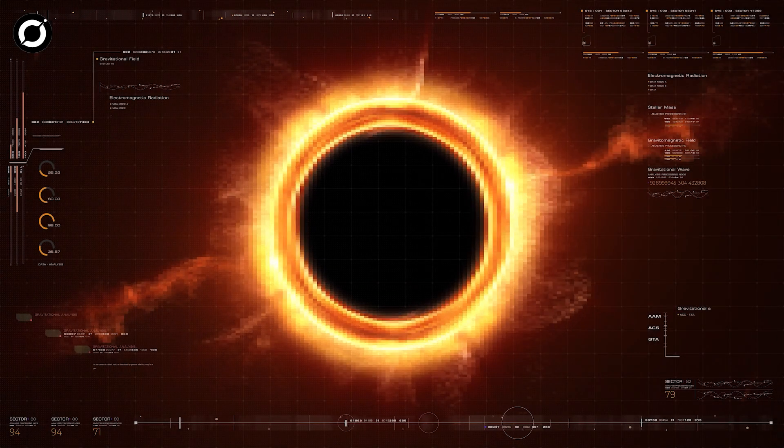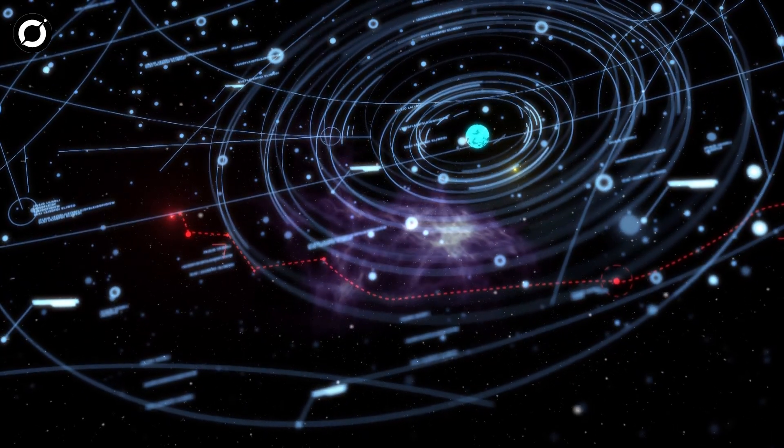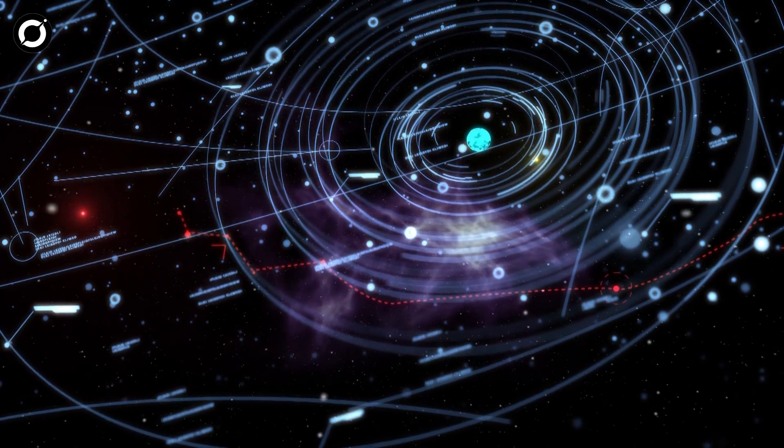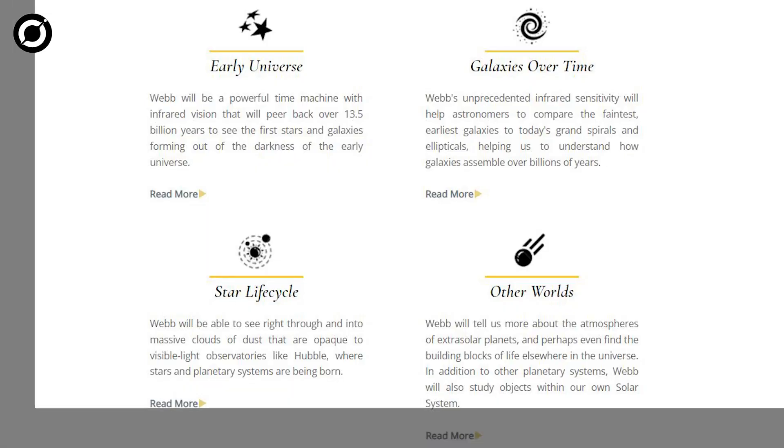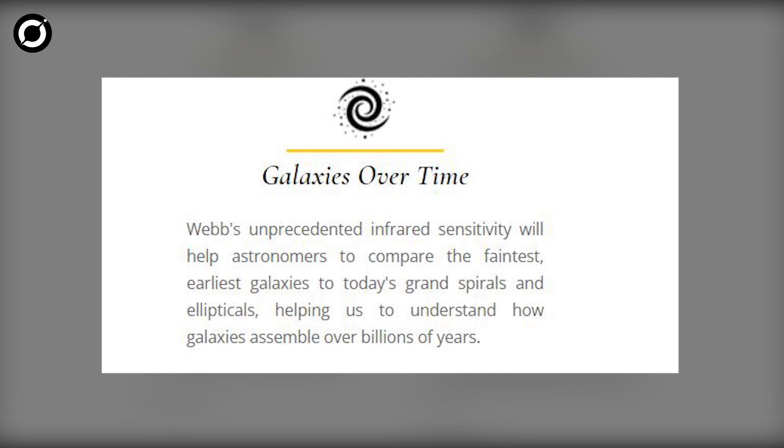Well, accurate masses for supermassive black holes, like Eye of Sauron's, will help astronomers build more accurate models of how galaxies form and evolve, which aligns with one of Webb's main science themes: to study galaxies over time.